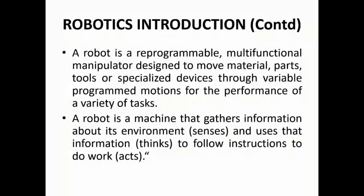A robot can be programmed. Without programming, it is just a machine — nothing inside. You can think of a robot like a computer: if you don't have any operating system inside a computer, it is simply an electronics part or just a machine. But when you put in software like an operating system and application software, it becomes useful.